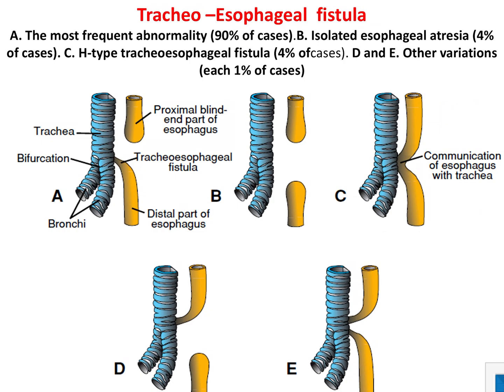Now, coming to the applied anatomy of the respiratory tract. The most important is the tracheoesophageal fistula. If there is a defect in formation of the tracheoesophageal septum, that will lead to formation of tracheoesophageal fistula. It is of five types: A, B, C, D, and E. In the first type, which is most common, the yellow one is the esophagus and the bluish one is the trachea. The proximal part of the esophagus is blind, and the lower part communicates with the trachea. This type is present in 90 percent of cases.